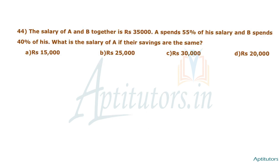Next question: the salary of A and B together is 35,000 rupees. A spends 50% of his salary and B spends 40% of his salary. What is the salary of A if their savings are the same?